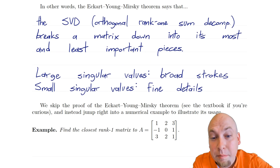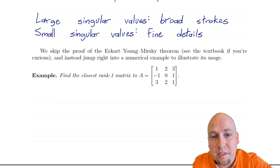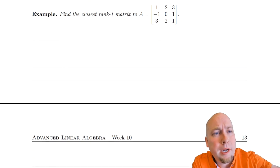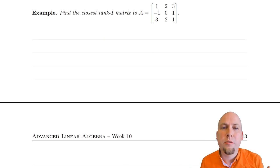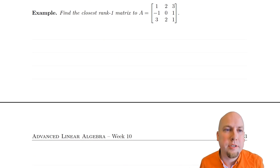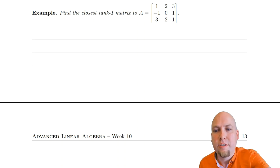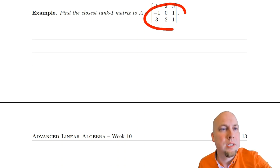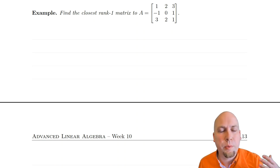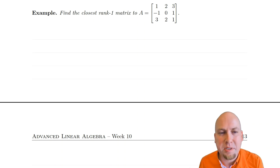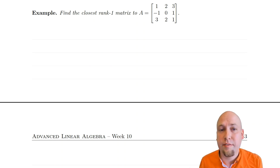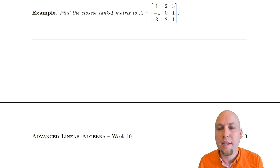We're not going to prove this theorem — the proof is in the textbook if you're curious. Instead, we're going to jump into a numerical example: finding the closest rank-one matrix to the matrix with entries 1, 2, 3, -1, 0, 1, 3, 2, 1. We've seen this matrix a couple of times before, and we've already computed its singular value decomposition back in lecture 34, so we can just use that.